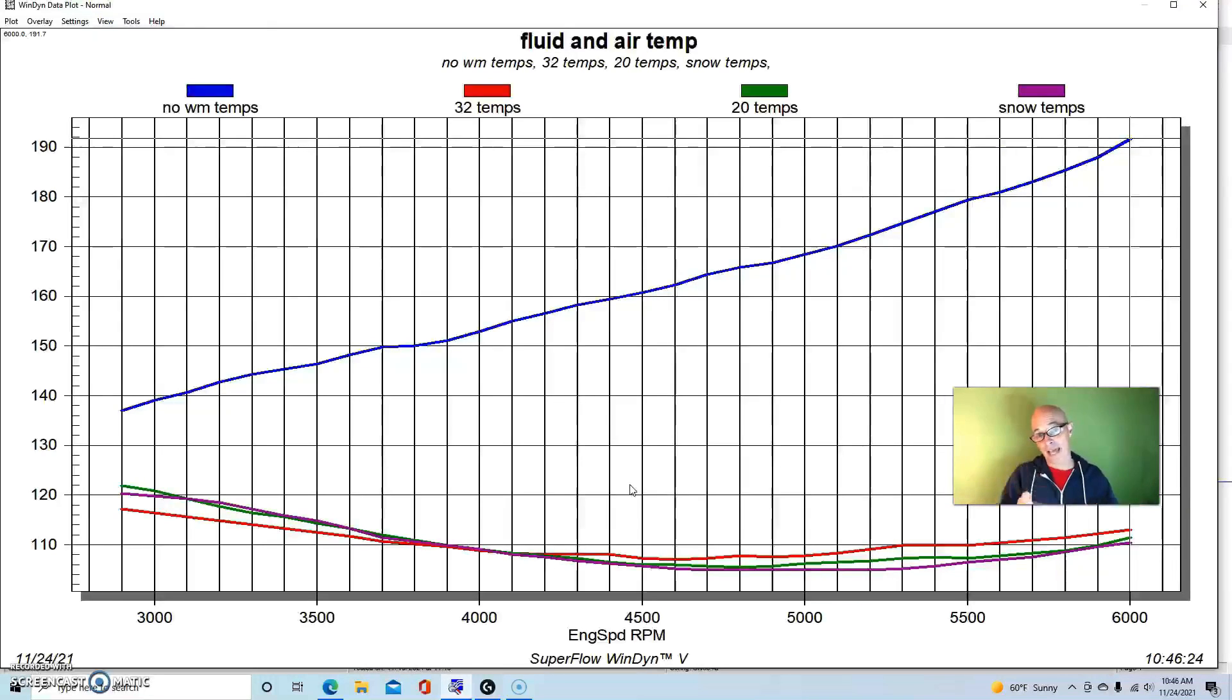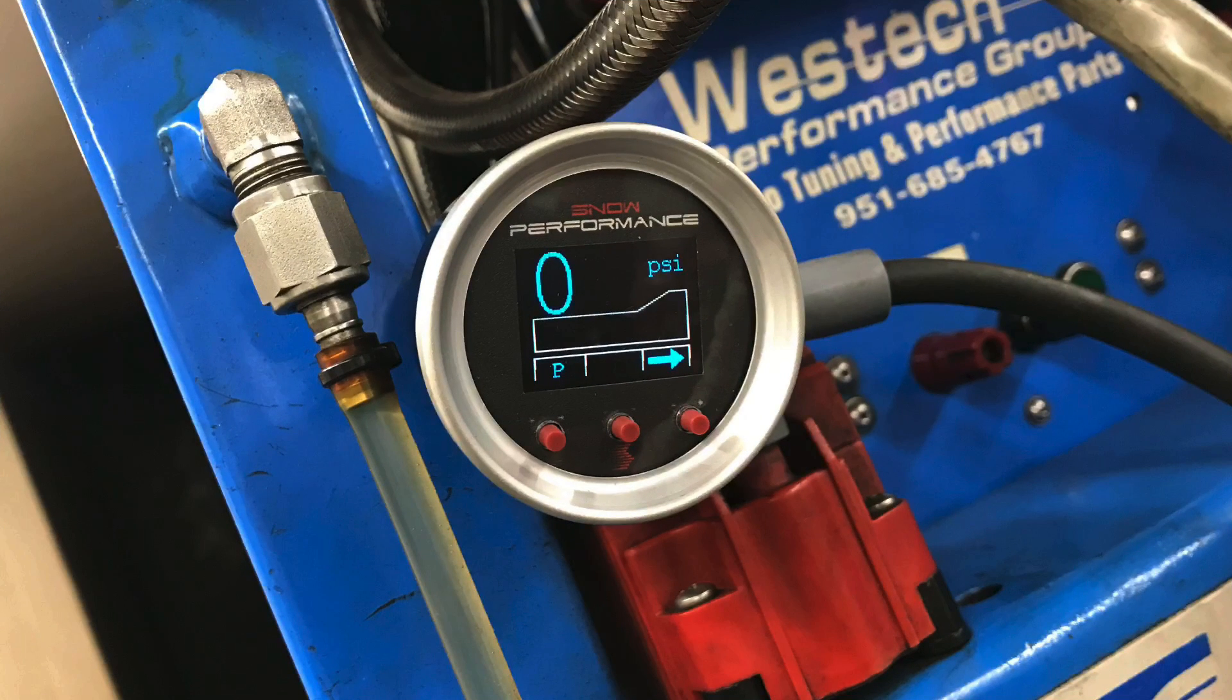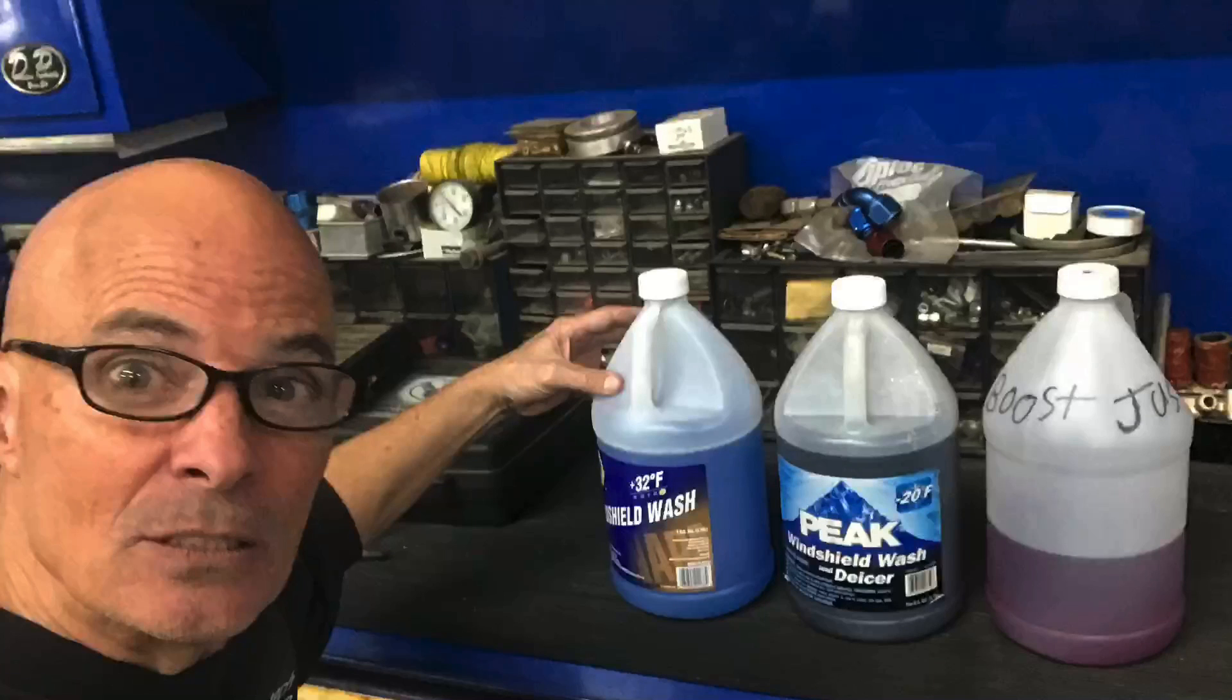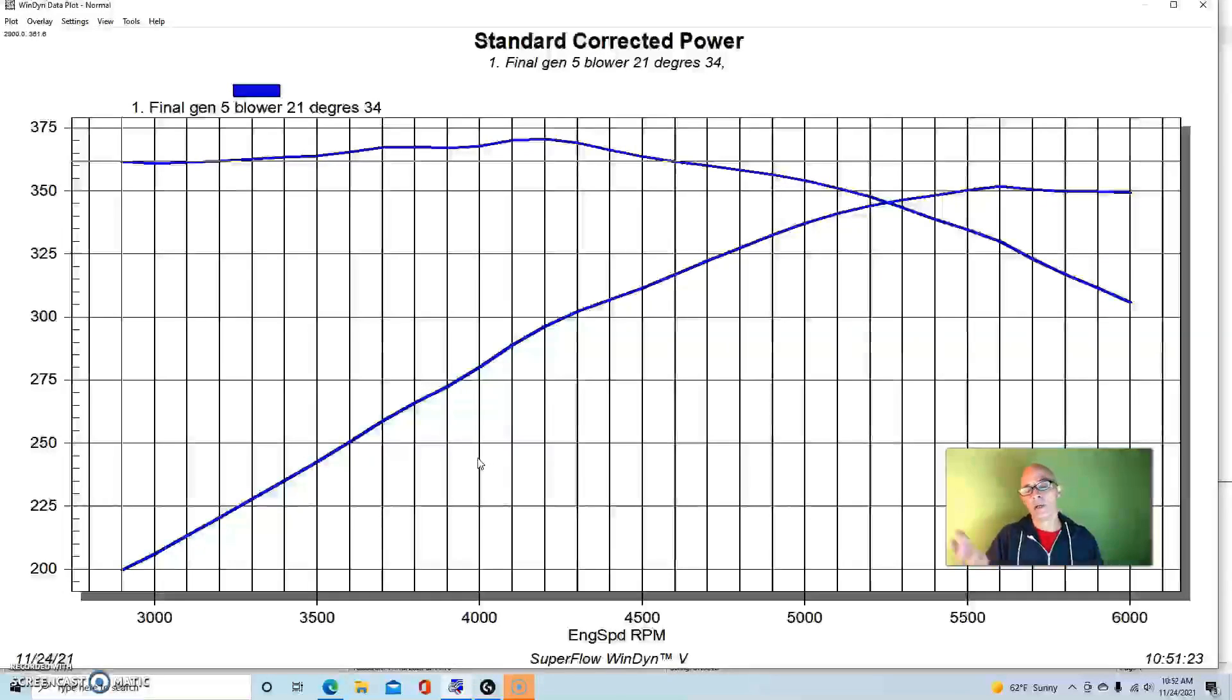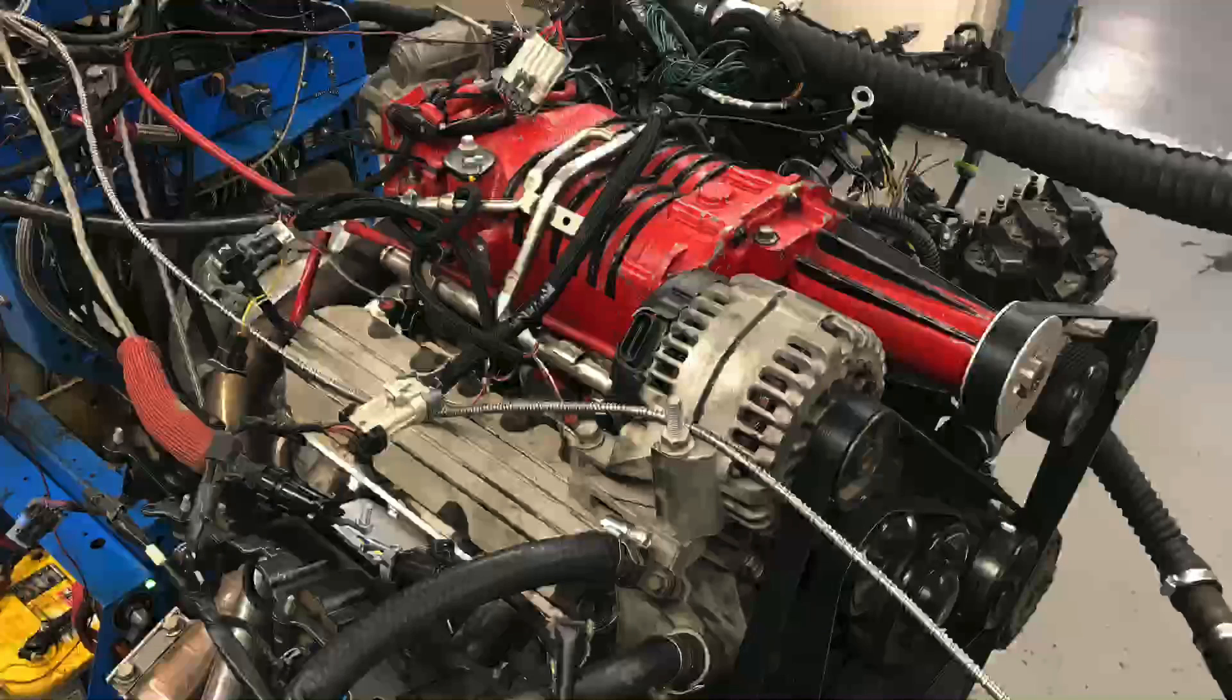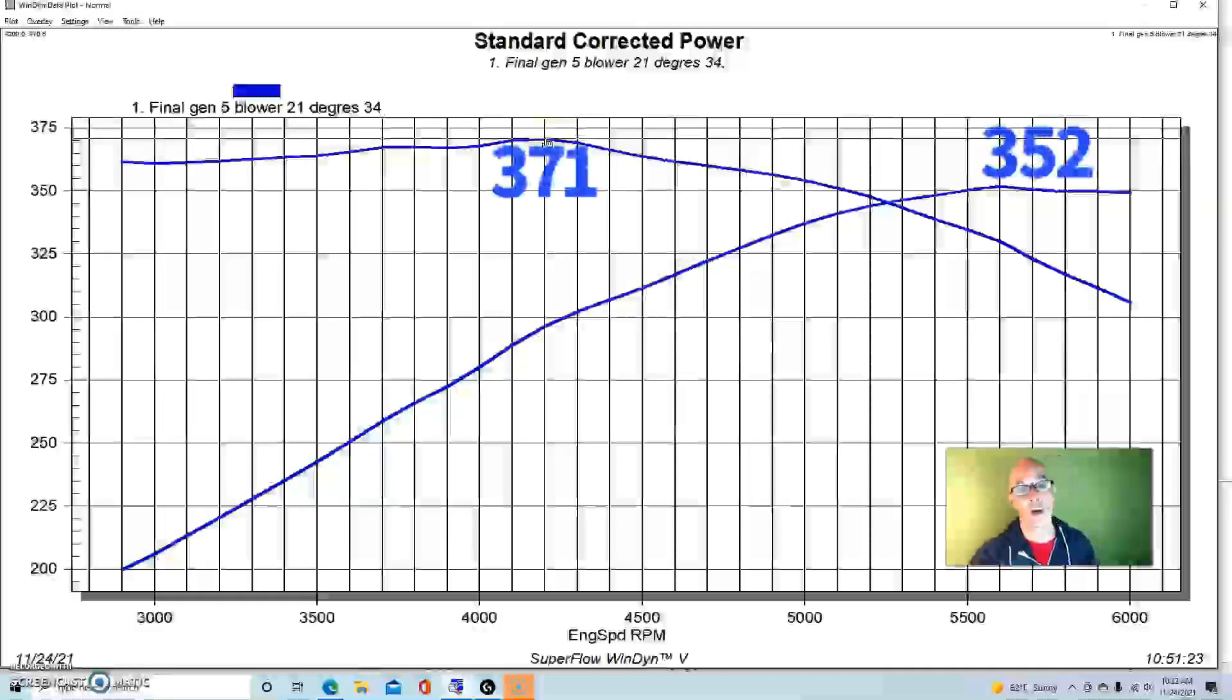So now let's take a look at that. Now that we've demonstrated that they all offer very good charge cooling, the boost cooler and the 32 degree and negative 20 degree versions of the windshield washer fluid, let's find out what happened with the power. So this is our combination with no water meth, 352 horsepower and 371 foot pounds of torque.